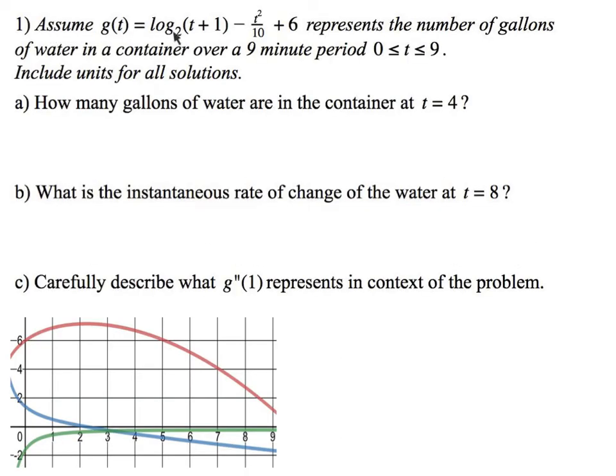Here we go. Assume this crazy log represents the number of gallons of water in a container over a nine-minute period. So g of t is that.